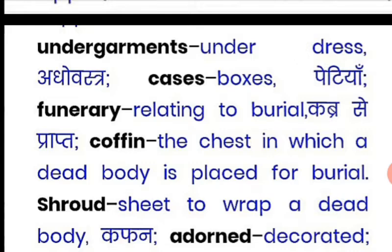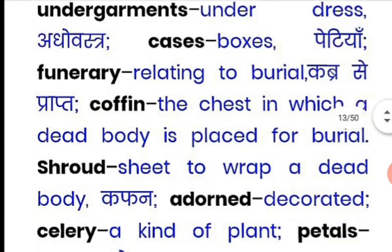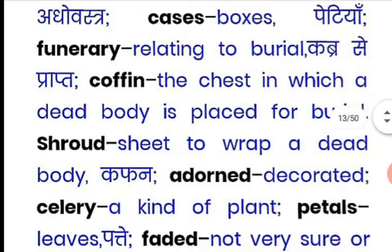'Bronze' is a mixture of brass and copper. 'Linen' is cotton. 'Undergarments' are underdress items. 'Cases' are boxes. 'Funerary' means relating to the burial. 'Coffin' is the chest or box — the structure in which a dead body is placed for burial. 'Shroud' is a coffin sheet used to wrap the dead body. 'Adorned' means decorated.